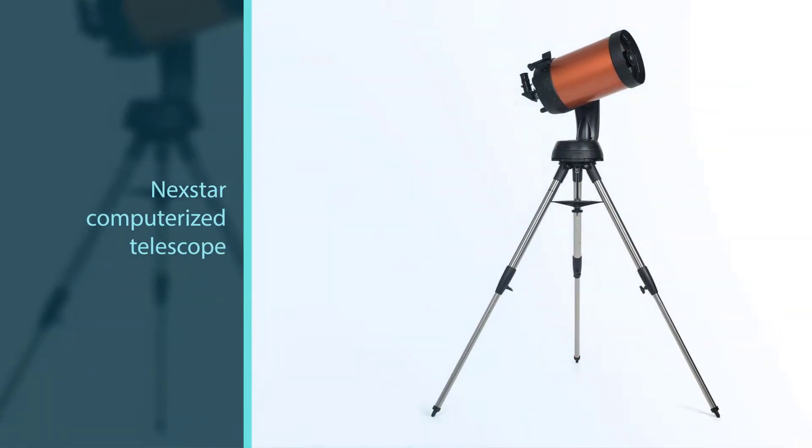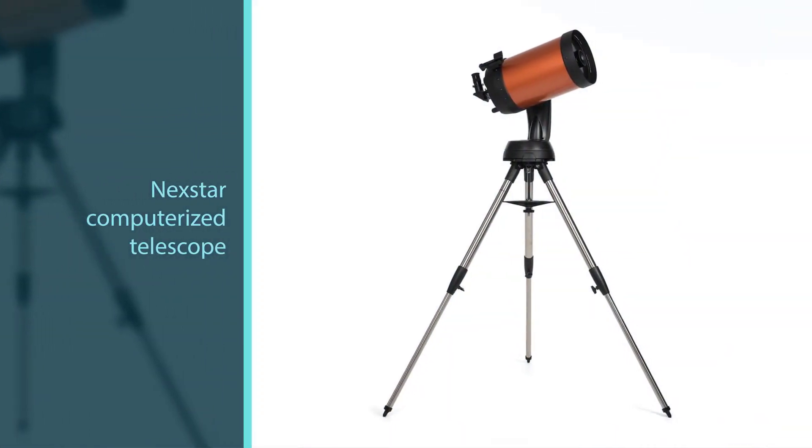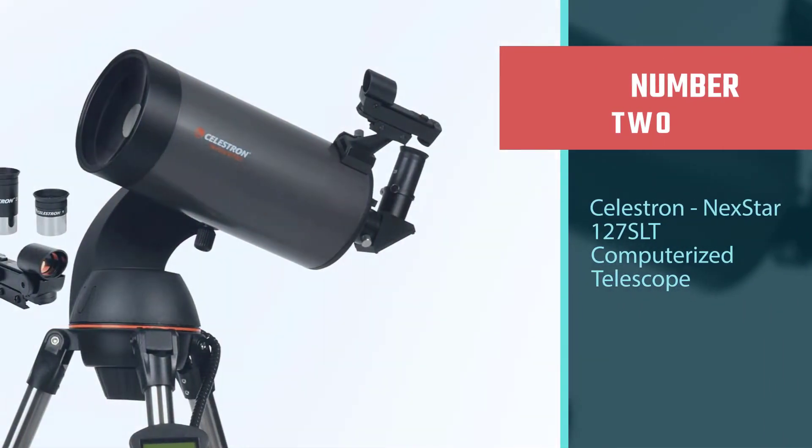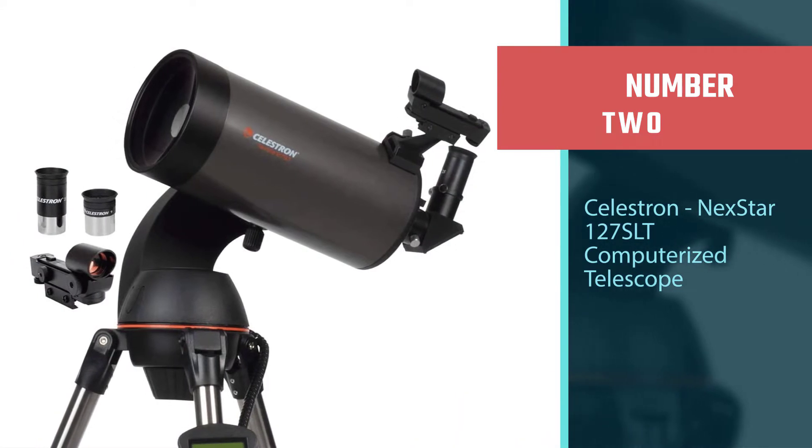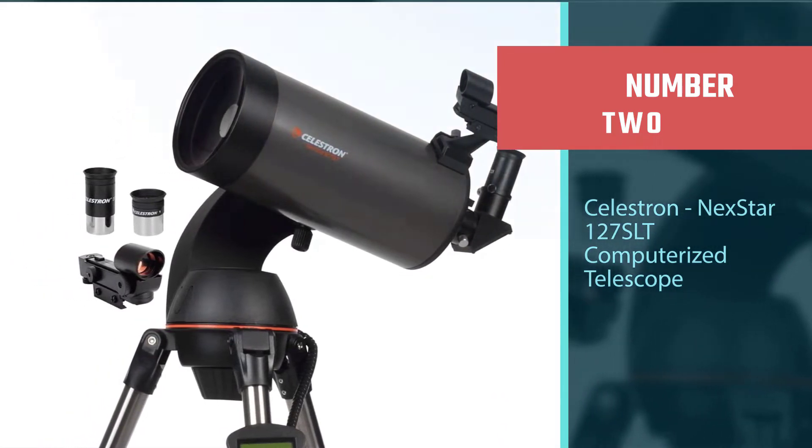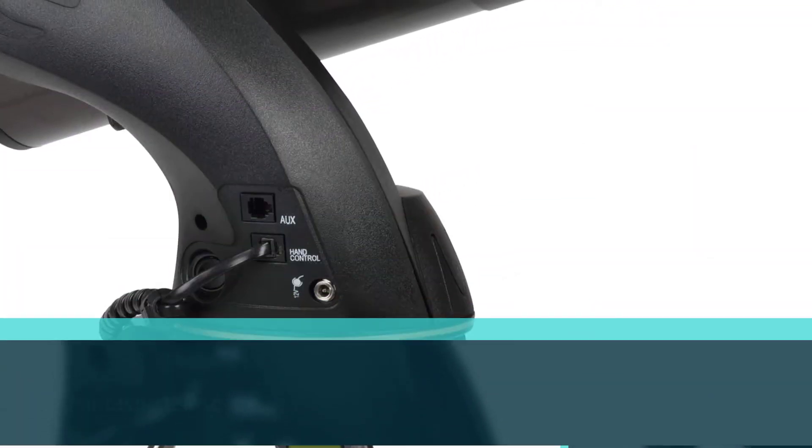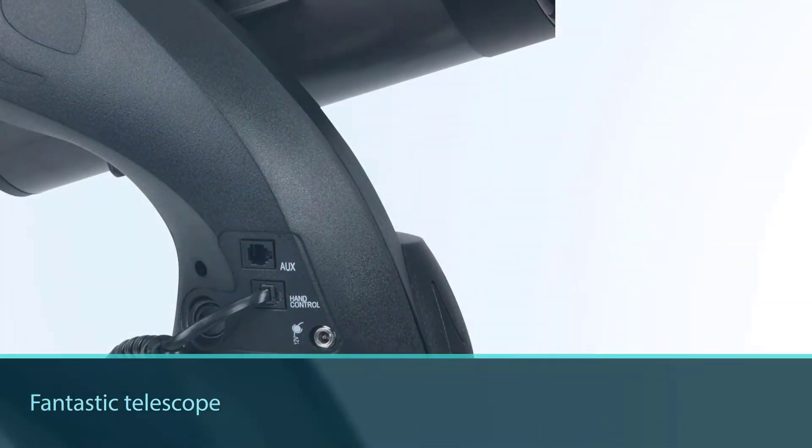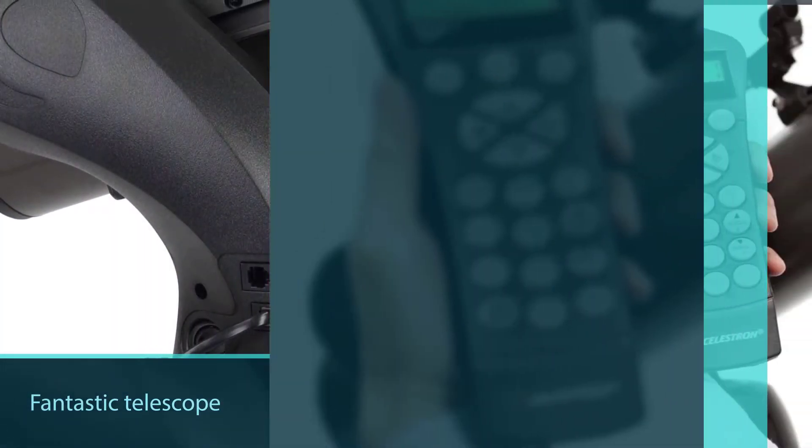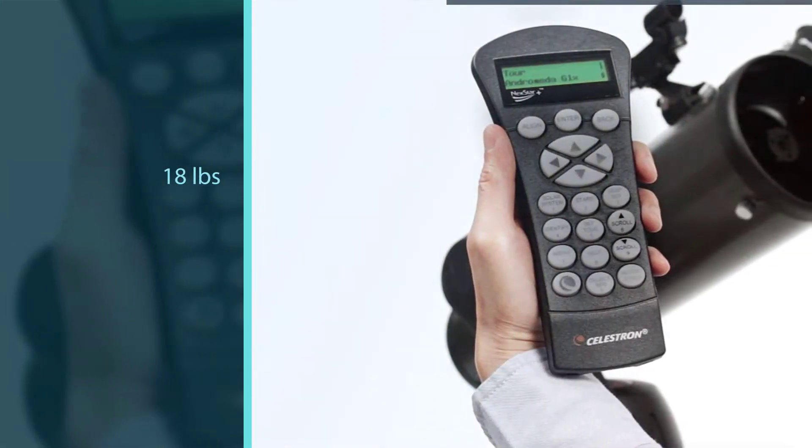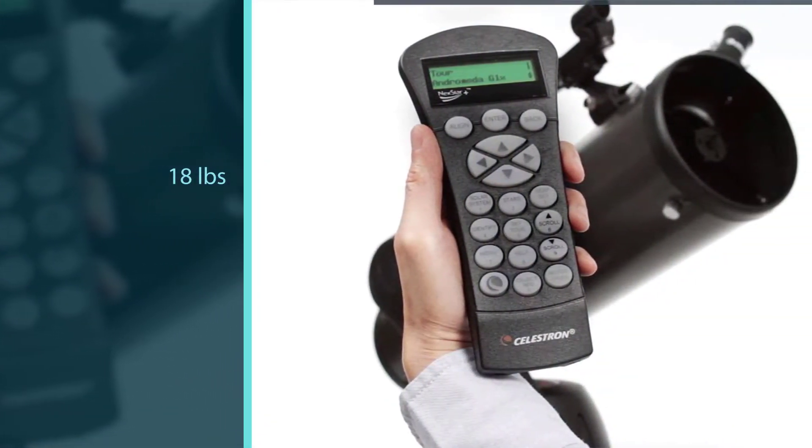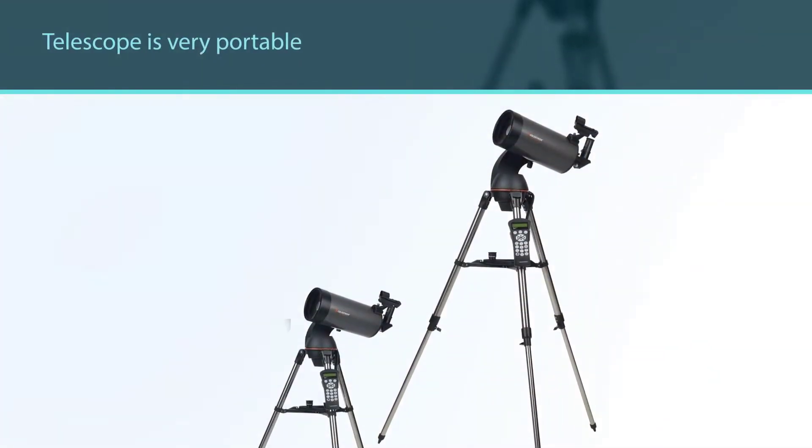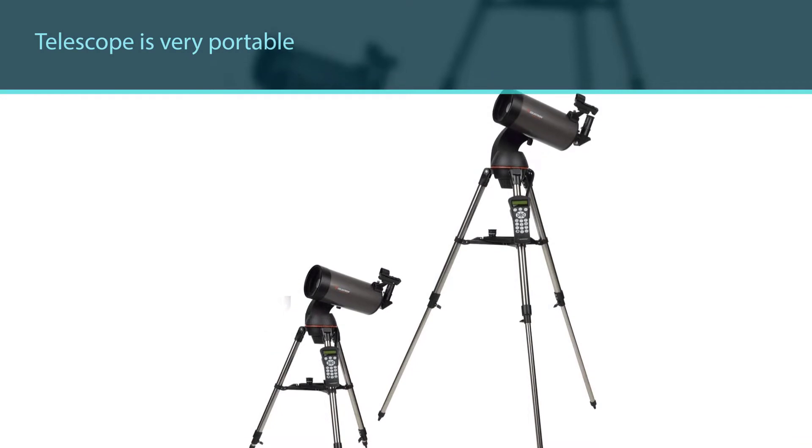Number two: Celestron NexStar 127 SLT computerized telescope. The NexStar 127 SLT is a fantastic telescope that provides good value from a reliable brand, backed by a two-year warranty. At 18 pounds, the telescope is very portable. The controls and SLT automation make it extremely easy to use. Alignment can be easily done via GPS coordinates.